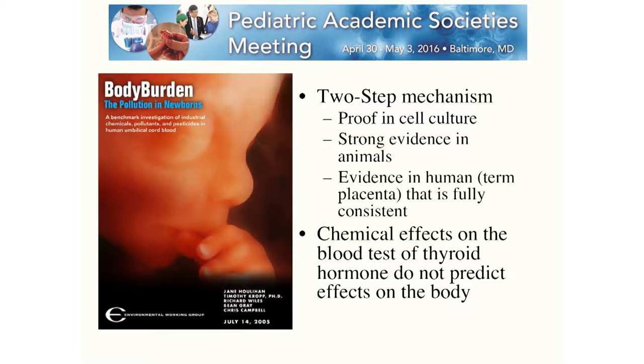We're proposing a two-step mechanism: the placenta, in what might be an attempt to detoxify chemicals, is instead bioactivating some of those chemicals, which then interfere with thyroid hormone action. We can show in vitro that the same chemical can act as a direct agonist or antagonist depending on the nature of the thyroid hormone response element. It's also important to recognize that thyroid hormone levels in the mother weren't altered — confirming that thyroid hormone blood levels don't faithfully represent all known mechanisms of thyroid hormone interference.